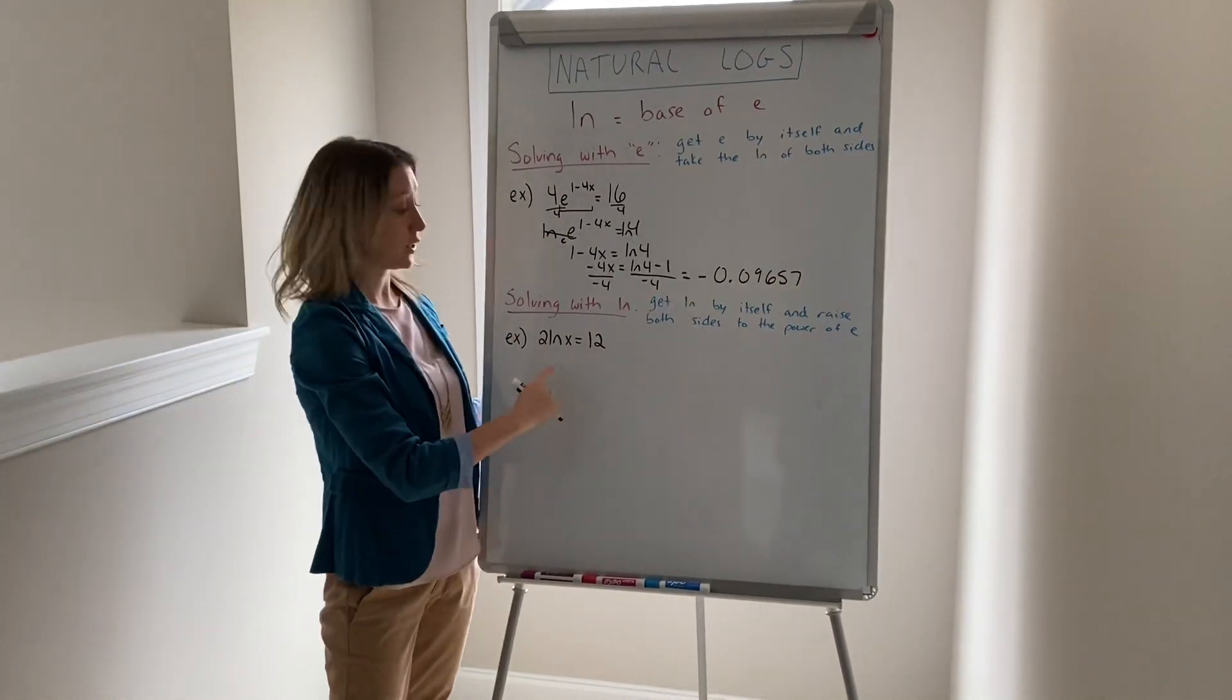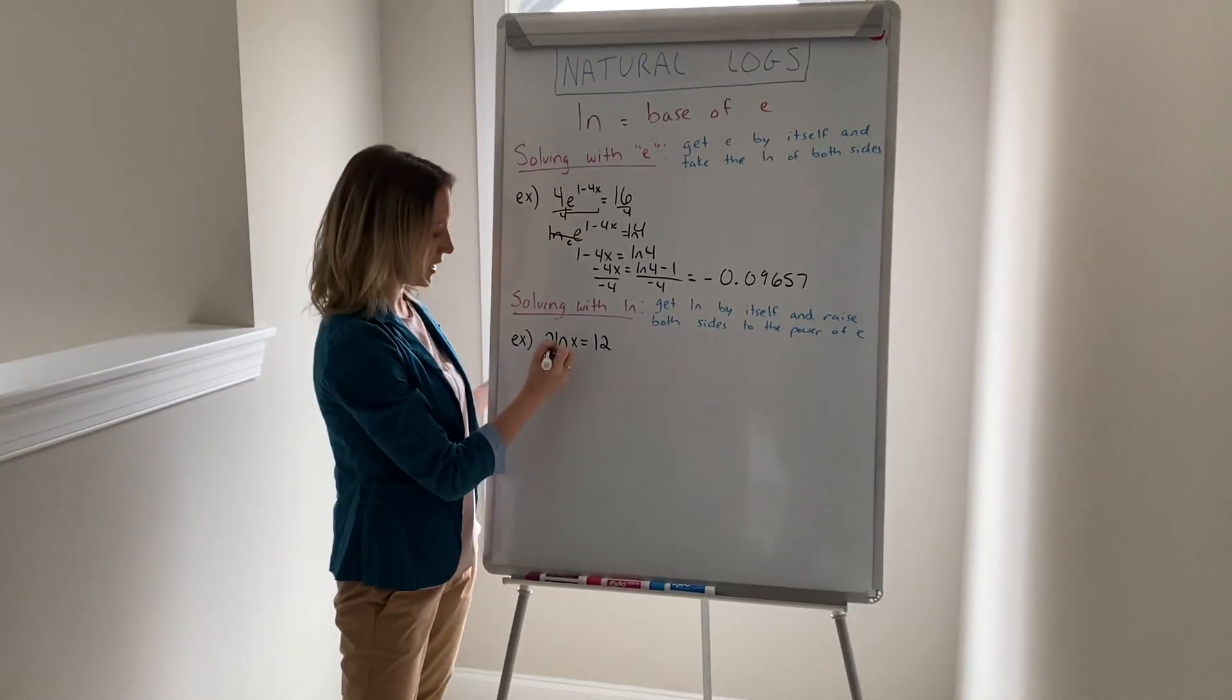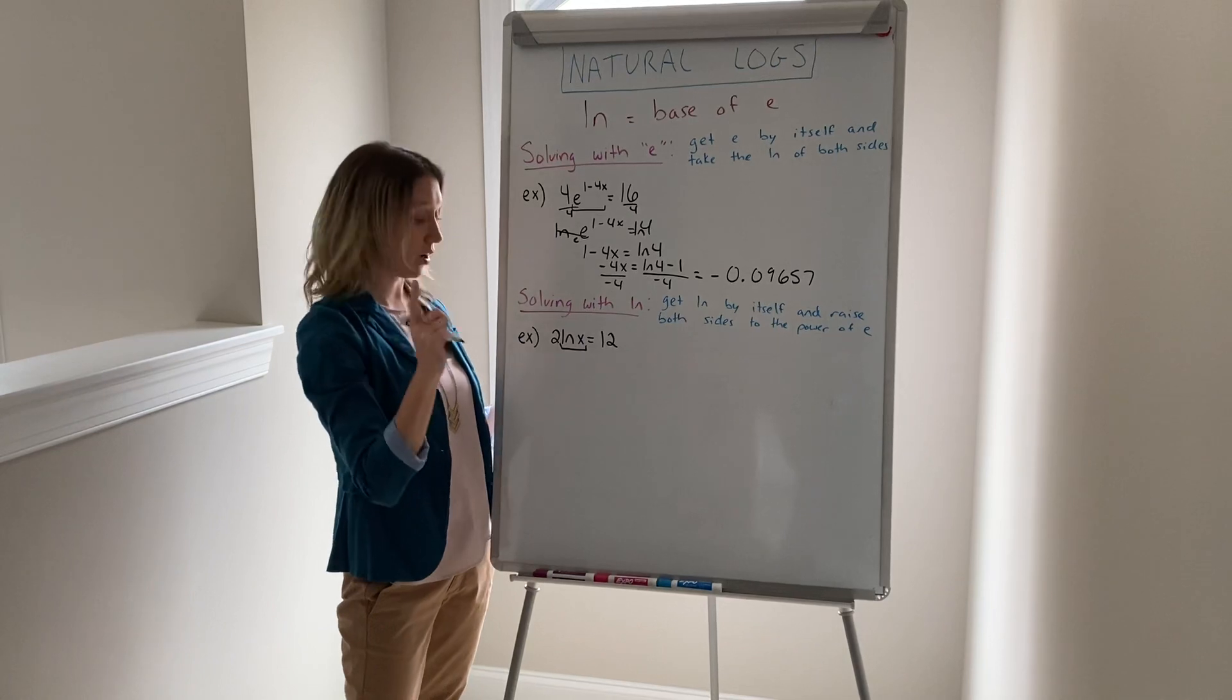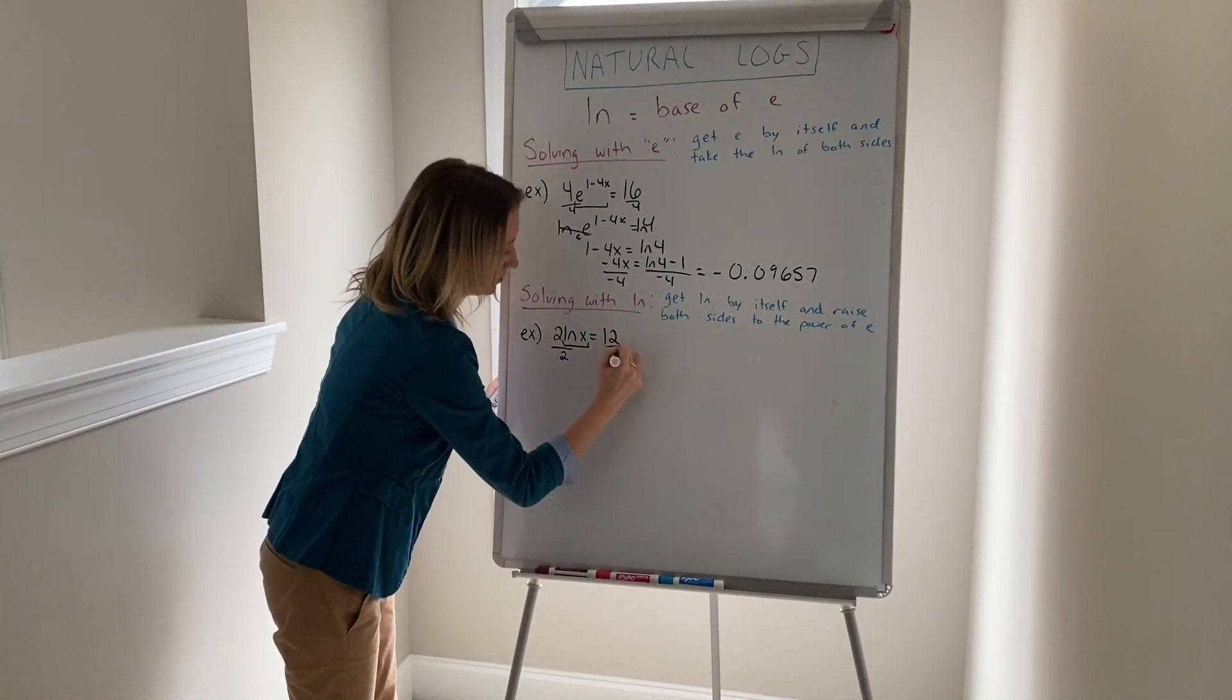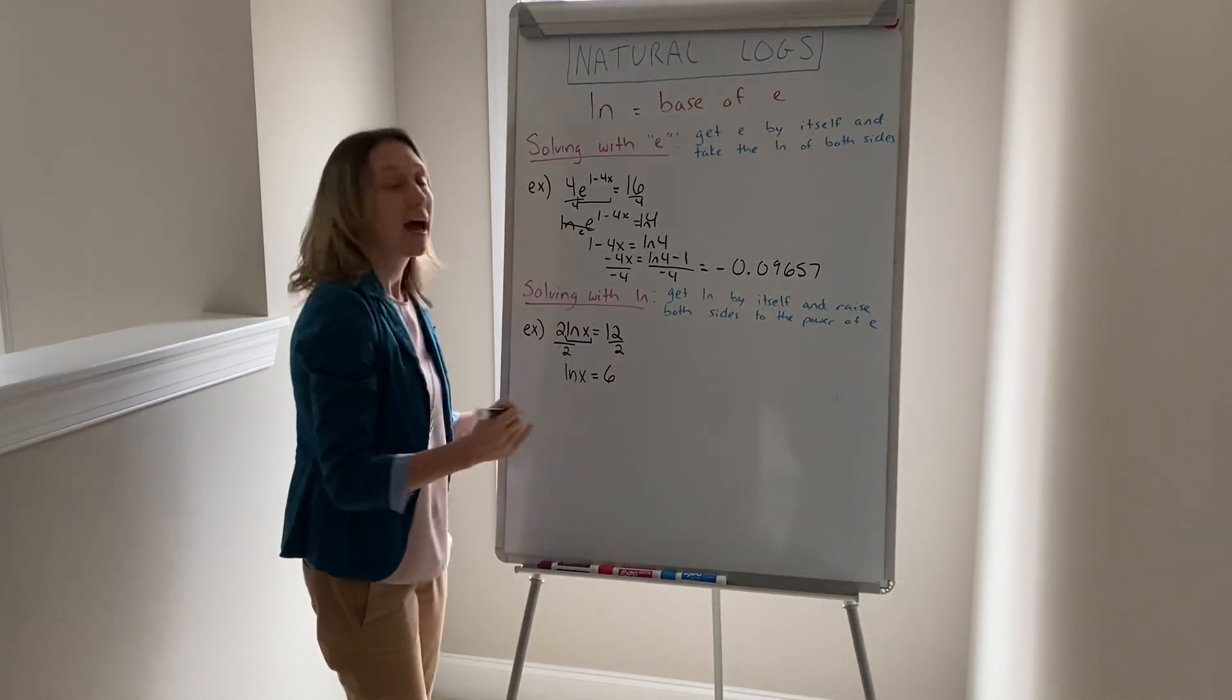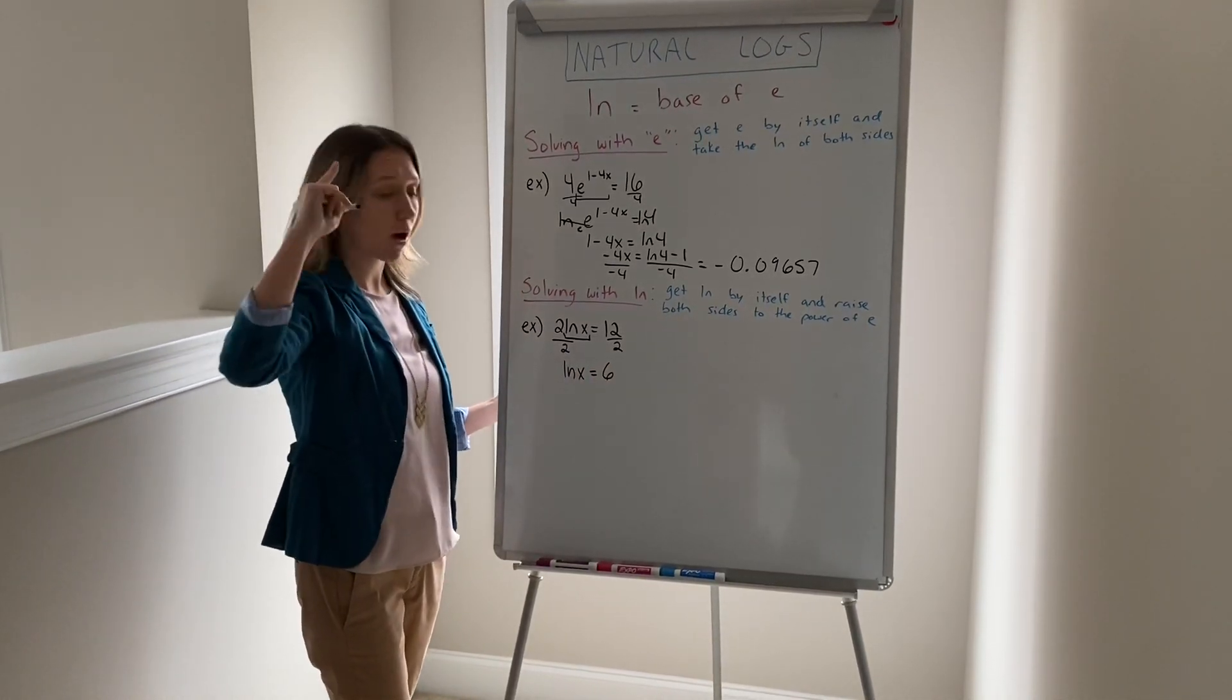Now if we're solving with natural logs, we still take the natural log by itself like we did up here with the e and then you raise both sides to the power of e. So I first divide by 2. This would give me natural log of x equals 6 and then you raise both sides to the power of e. So you do e^(ln x) equals e^6.